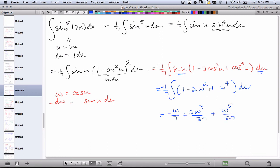And so in the end, w is cosine u, but u is 7x. So this is really just cosine 7x. And so in the end,